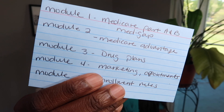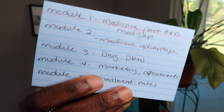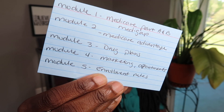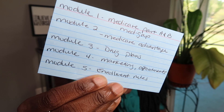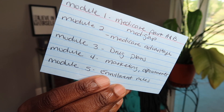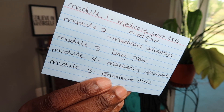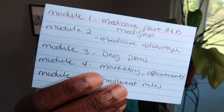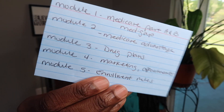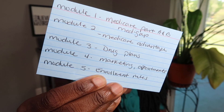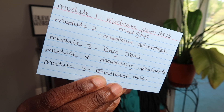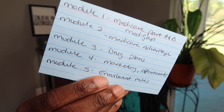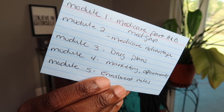Here is how I classify each of the five modules on this index card. Module one covers Medicare Part A and B and Medigap, which is supplement plans. Module two covers Medicare Advantage. Module three covers drug plans. Module four covers marketing and appointments. Module five covers enrollment rules.